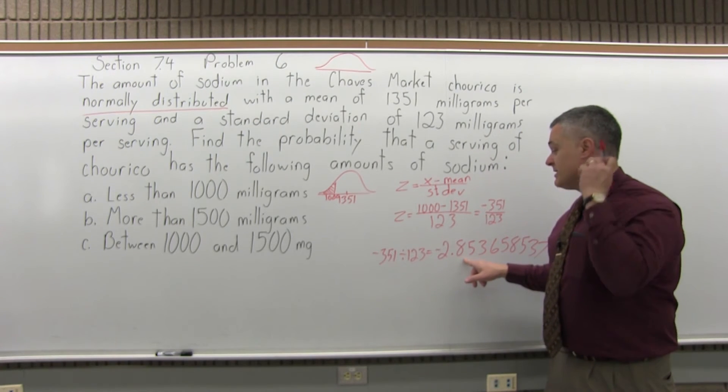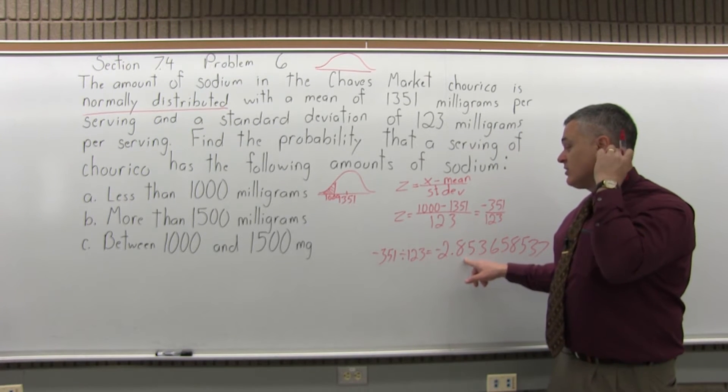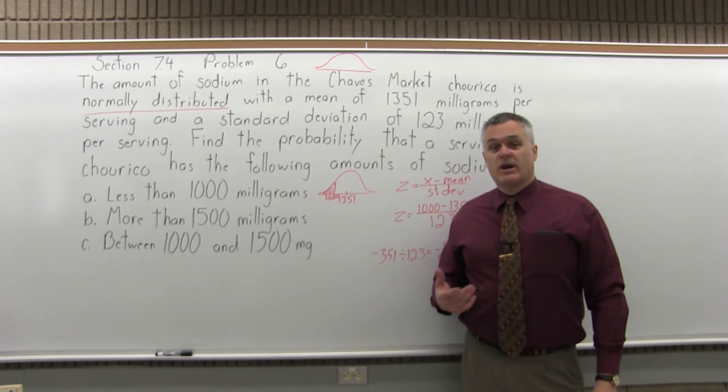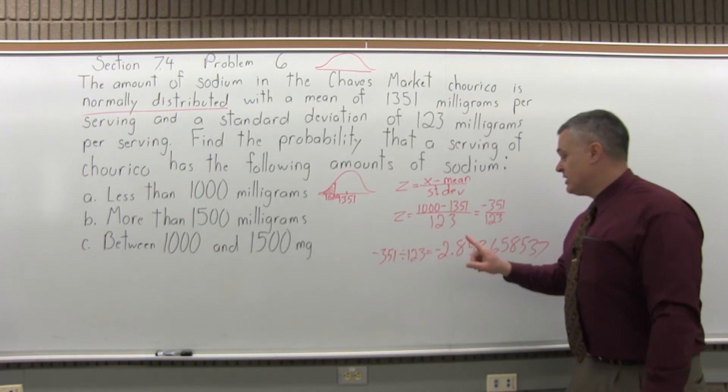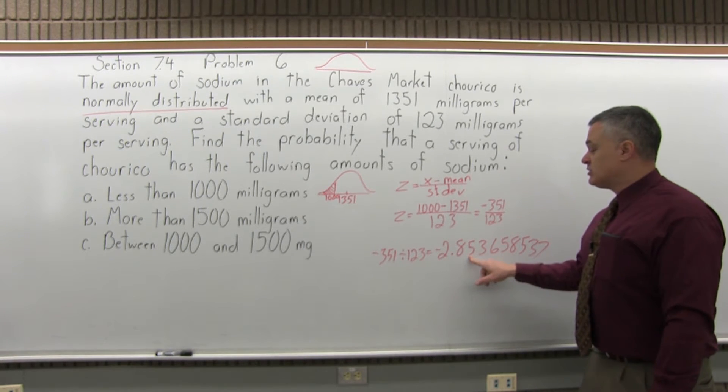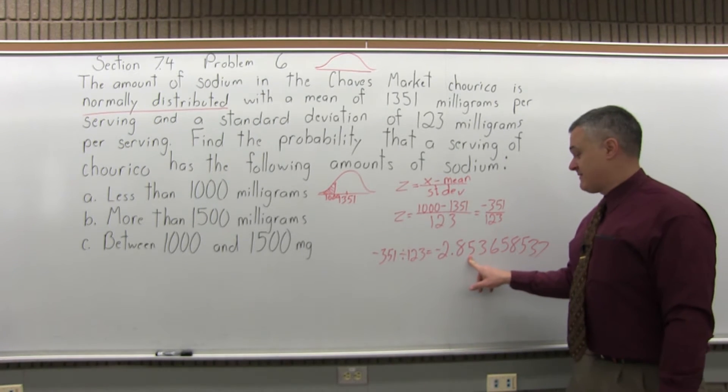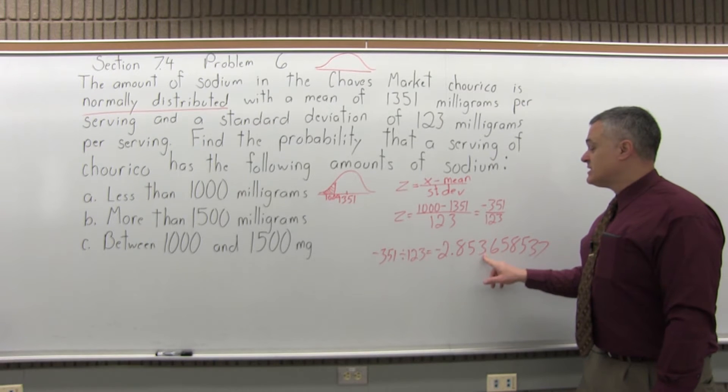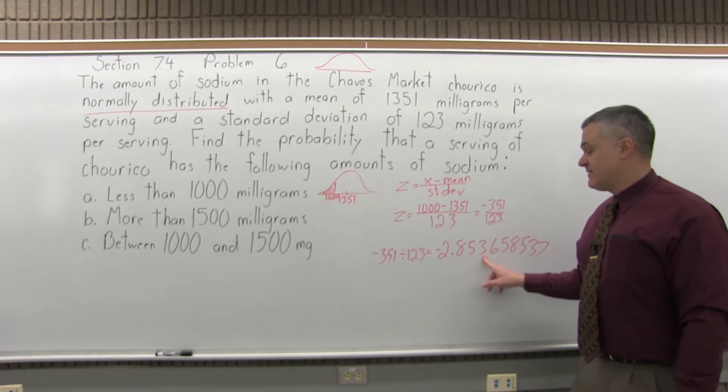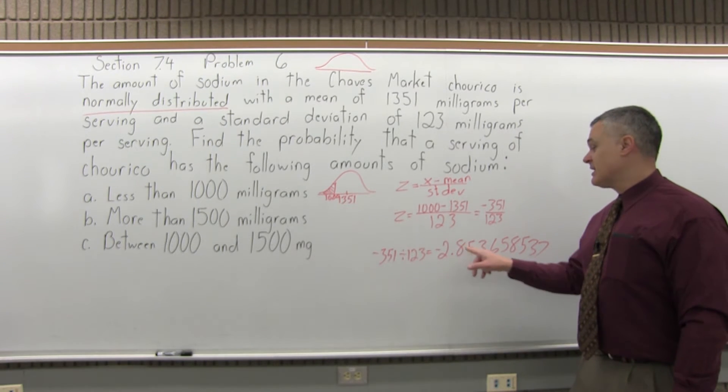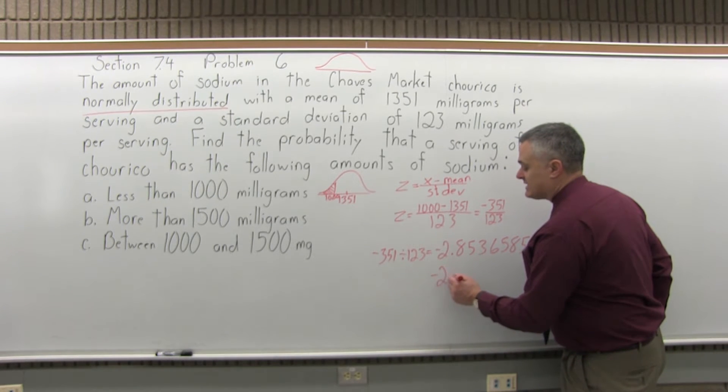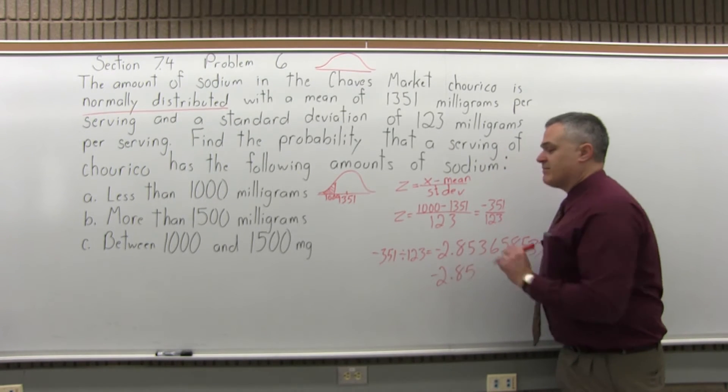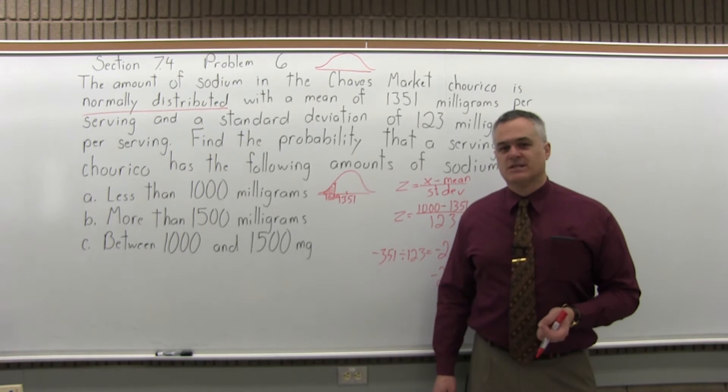That's what I want to look up in the standard normal chart. To look up anything in the standard normal chart, write the number so that it has two places after the decimal. Going two places, I'm at 5. The next position is a 3, not big enough to make it .86, so it chops at negative 2.85. That's the first step in looking up this number.